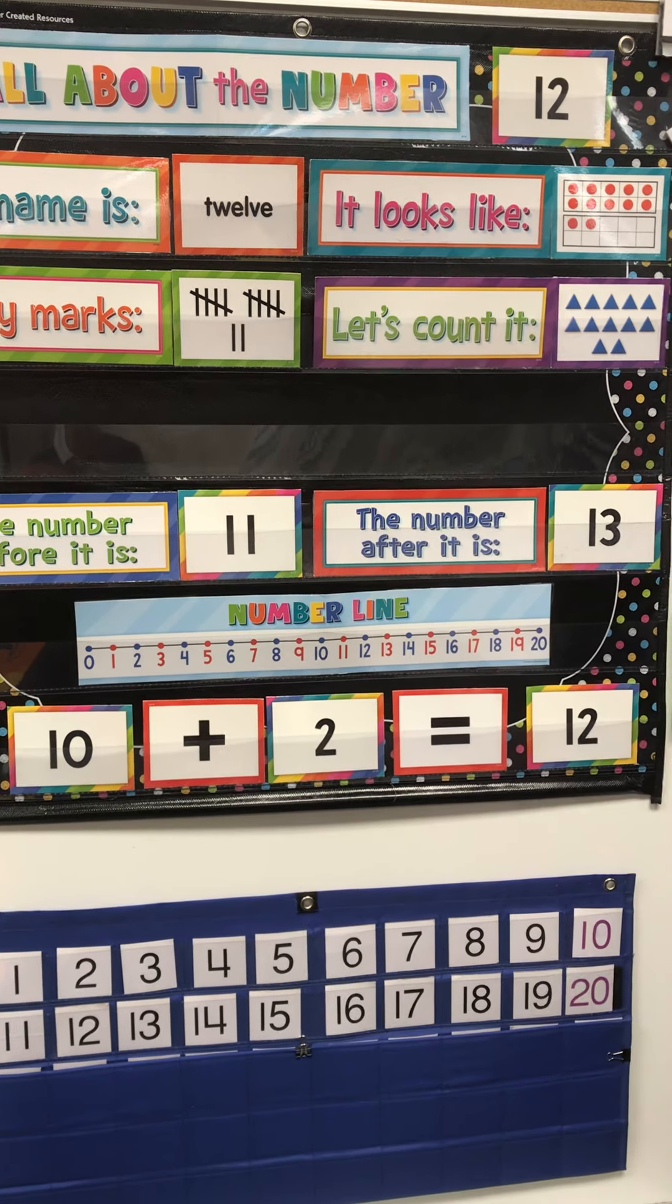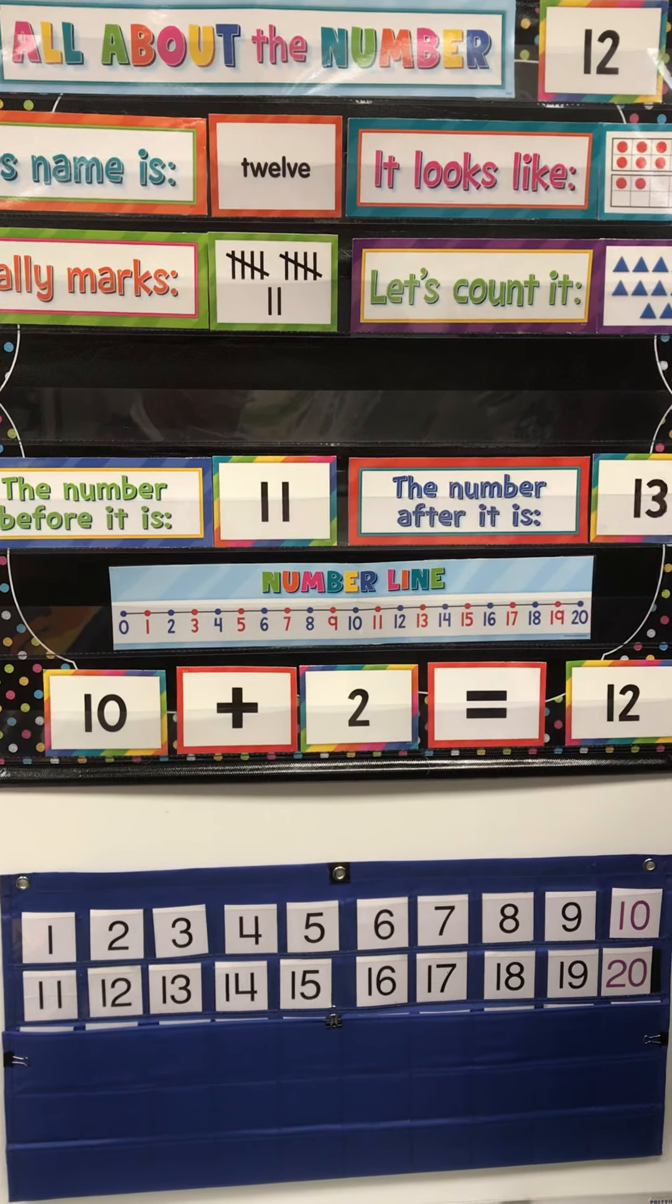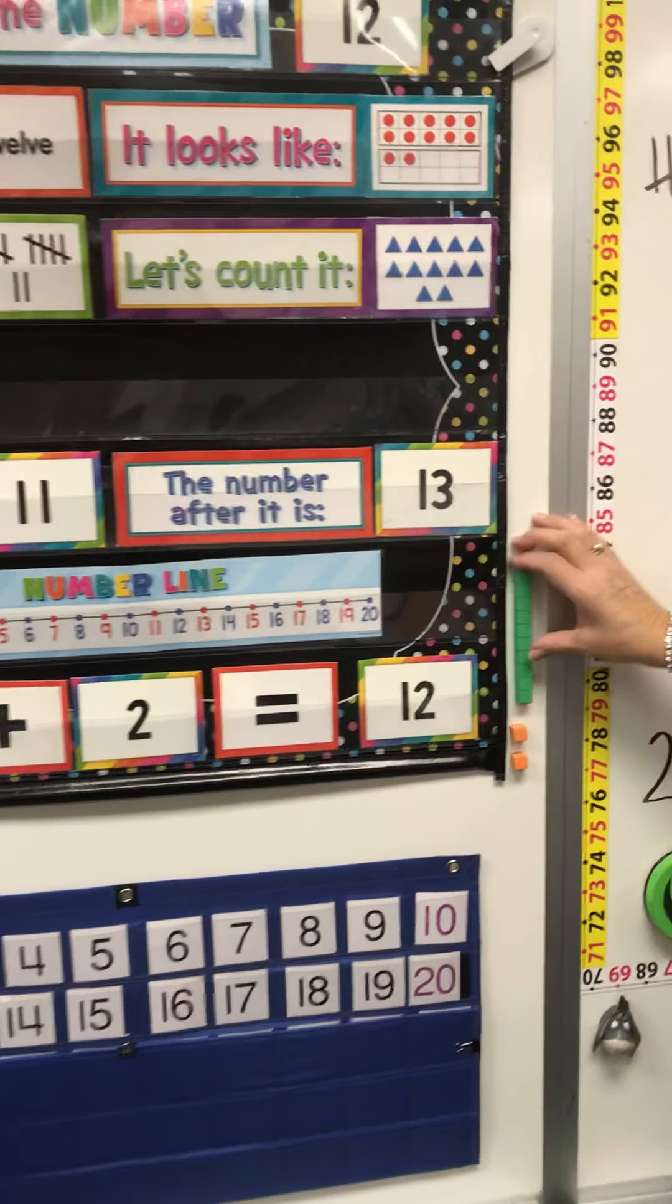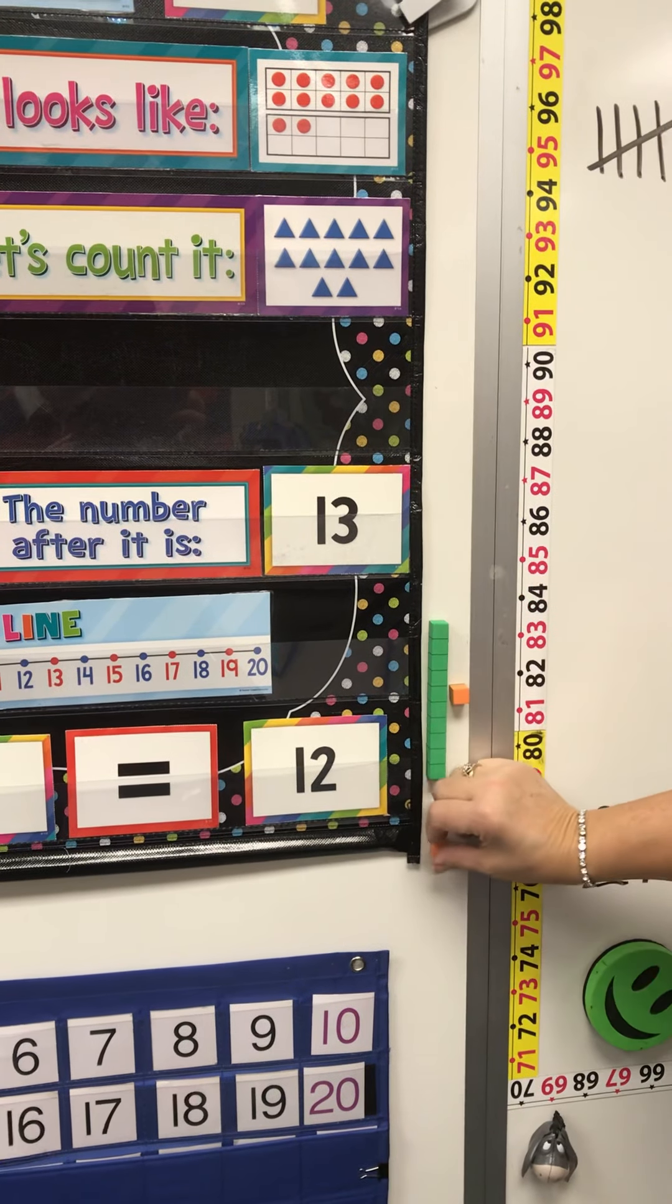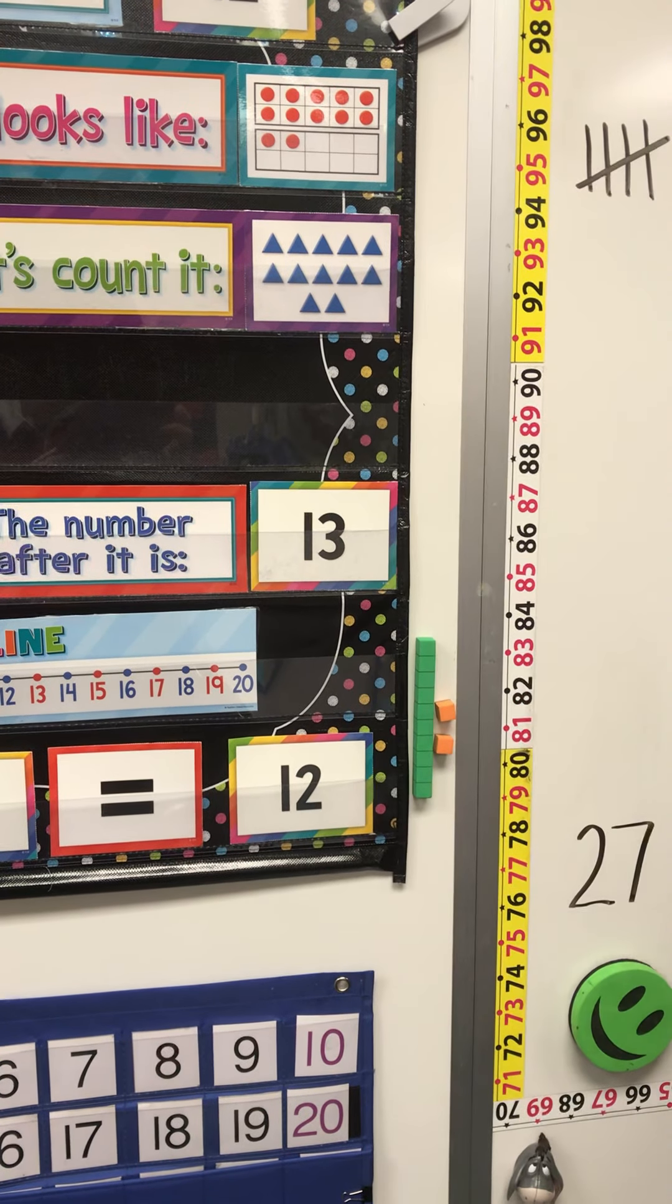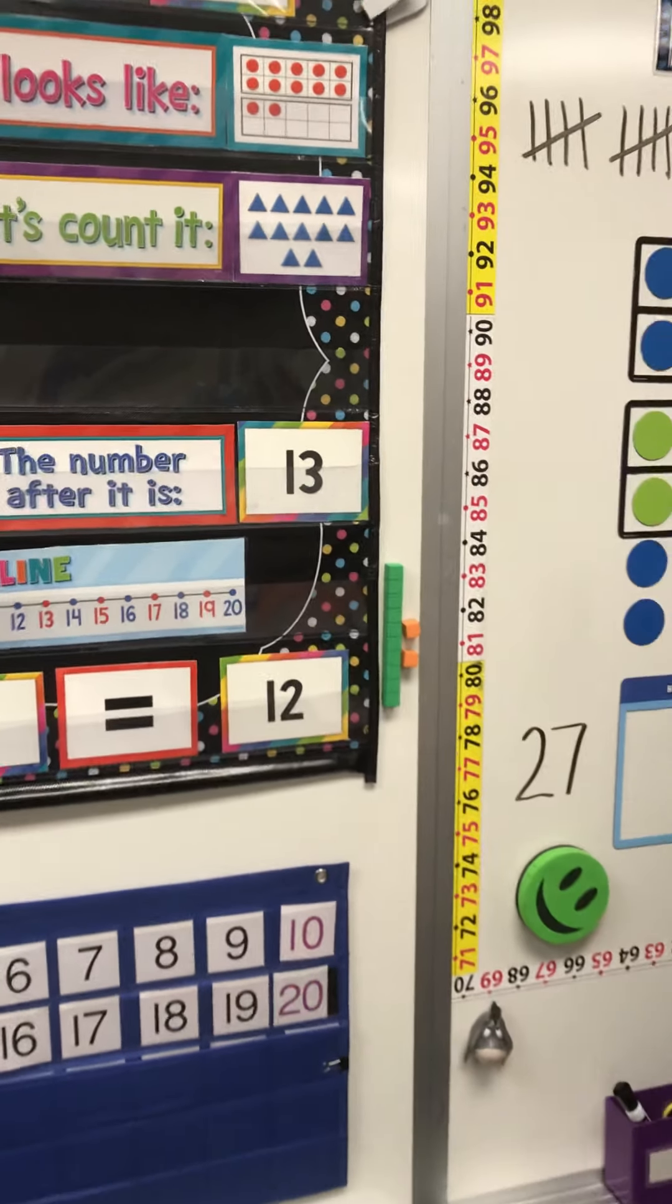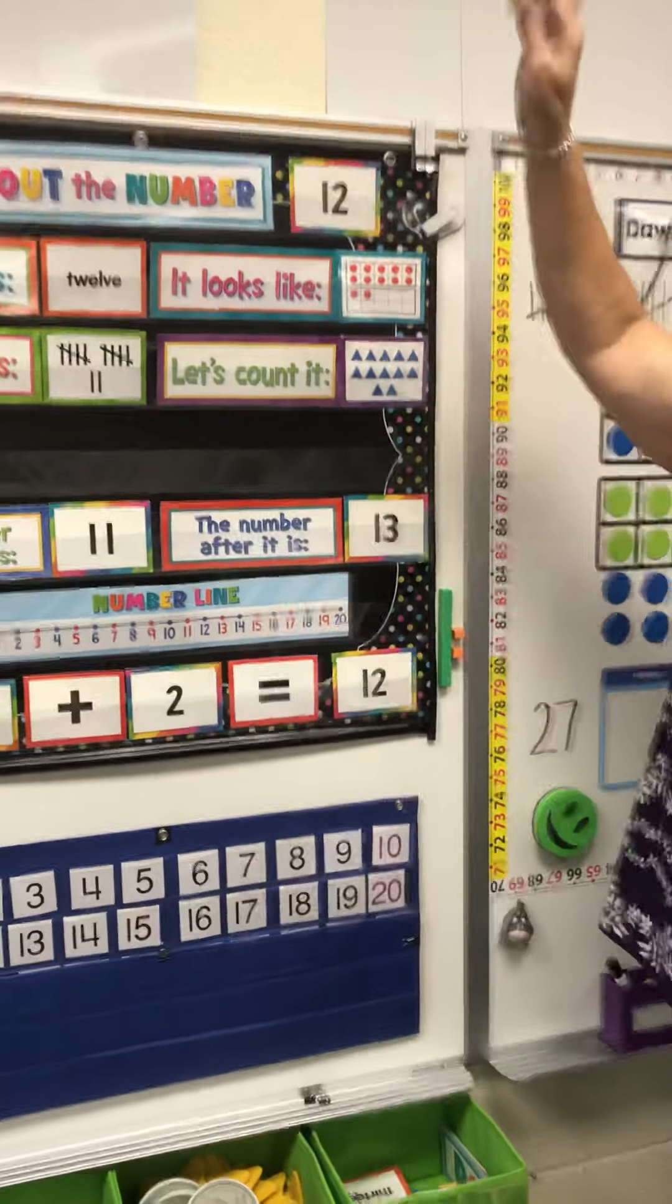A 1 ten and 2 ones. There's the 1 ten and there's the 2 ones. So 10, 11, 12. That's how we can make a 12.